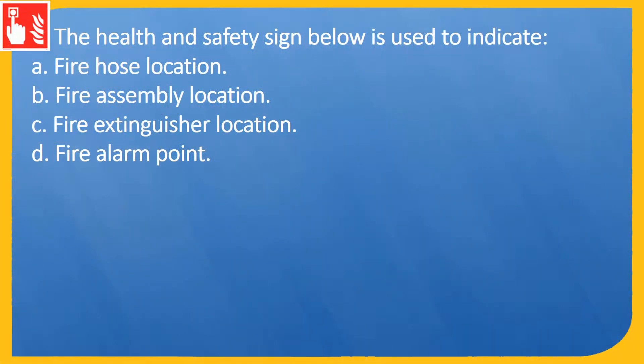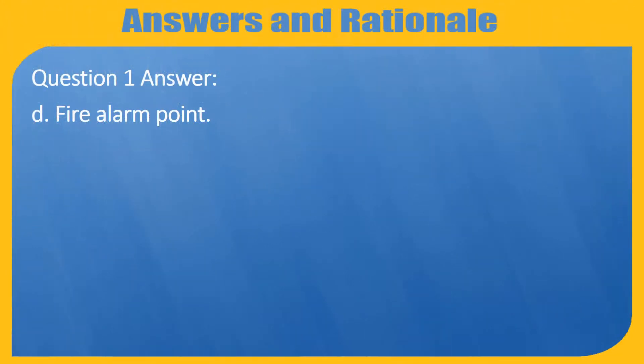Question 1. The health and safety sign below is used to indicate: A. Fire hose location. B. Fire assembly location. C. Fire extinguisher location. D. Fire alarm point. Question 1 answer: D.